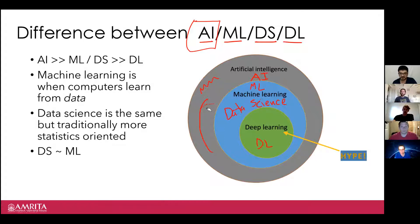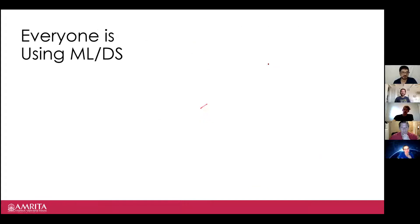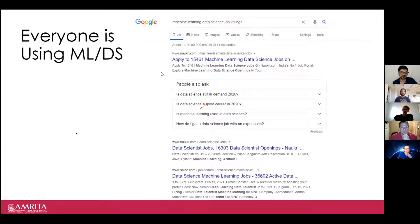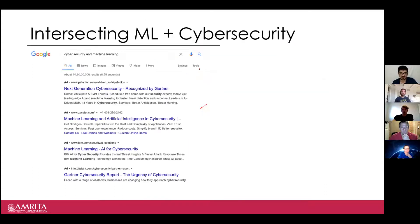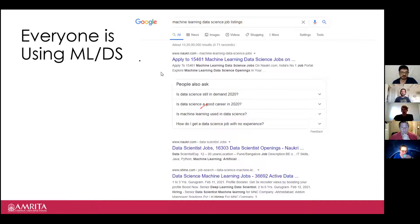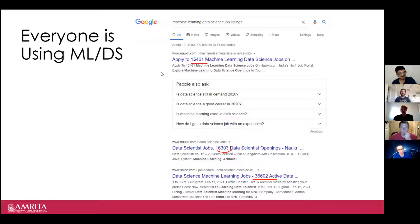So now you hopefully have a decent idea of what these terms mean. One thing I want to point out: everyone is using machine learning and data science right now. From a Google search about three months ago: 15,000 machine learning job openings, 16,000 data science job openings, 36,000 postings. There's some noise in those numbers, but it's a good plug for taking a data science course — it's a booming field right now.